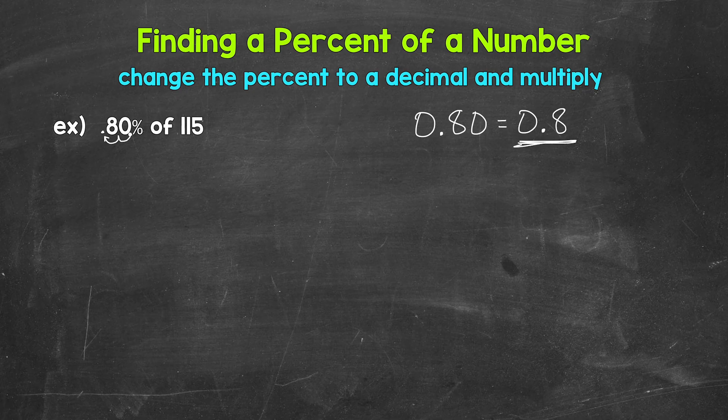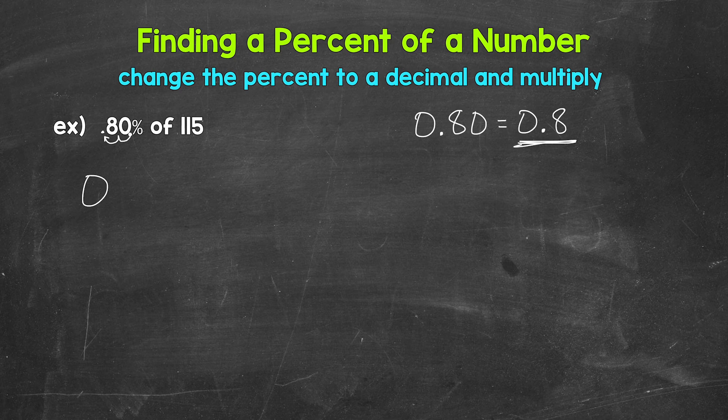Now that we have our decimal, we multiply. So we need to do eight-tenths times 115.